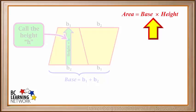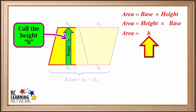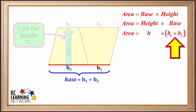Remember the area of a parallelogram is the base times the height, which is the same as saying it's the height times the base. The height is called H, and the base is B1 plus B2.